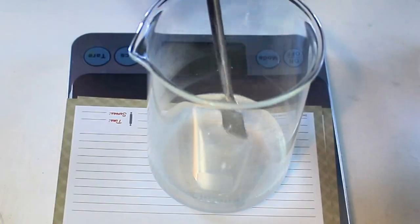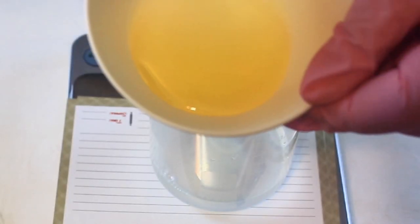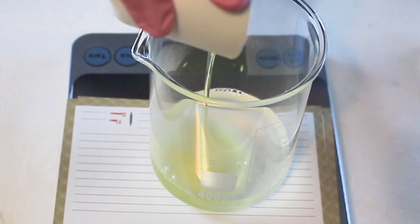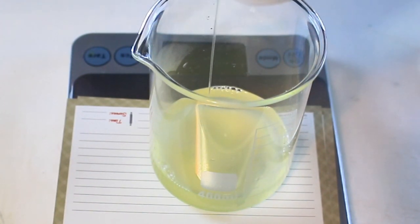I'm adding in the Plantapon SF, the pre-blended surfactant—I'm adding 30 grams. Again, you could actually use 30 grams of the surfactant and then 70 grams of water and you'd have a nice little hand wash.